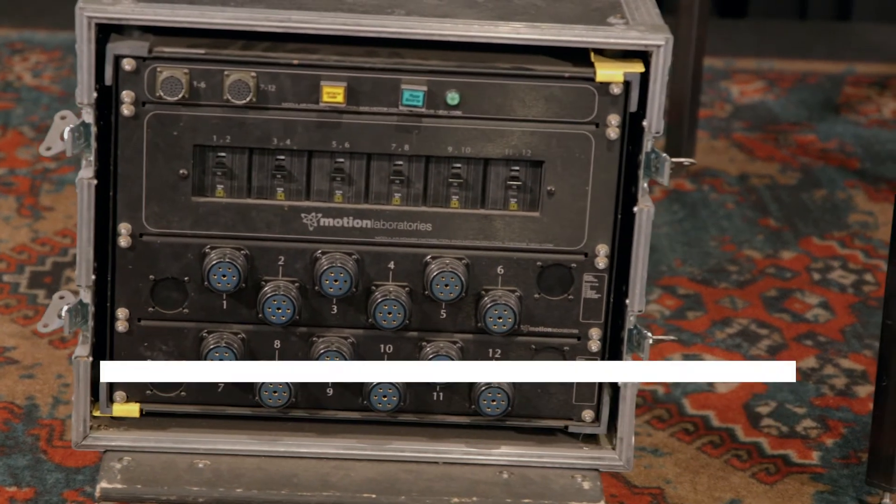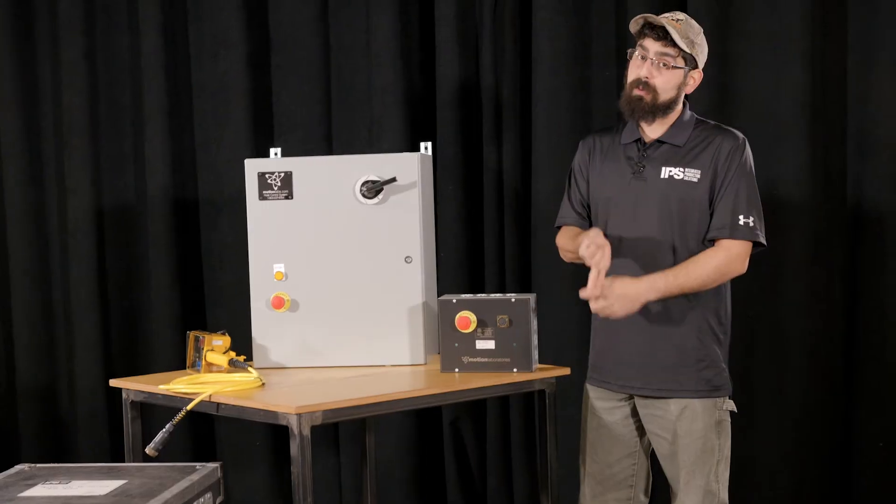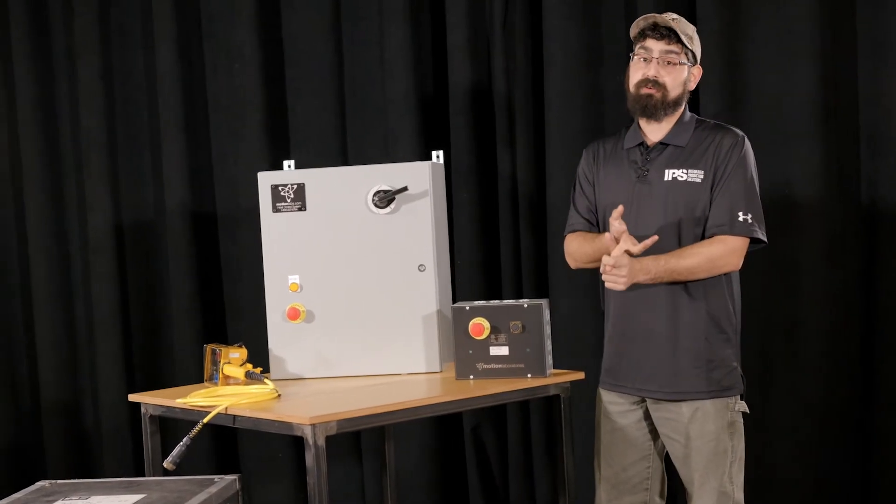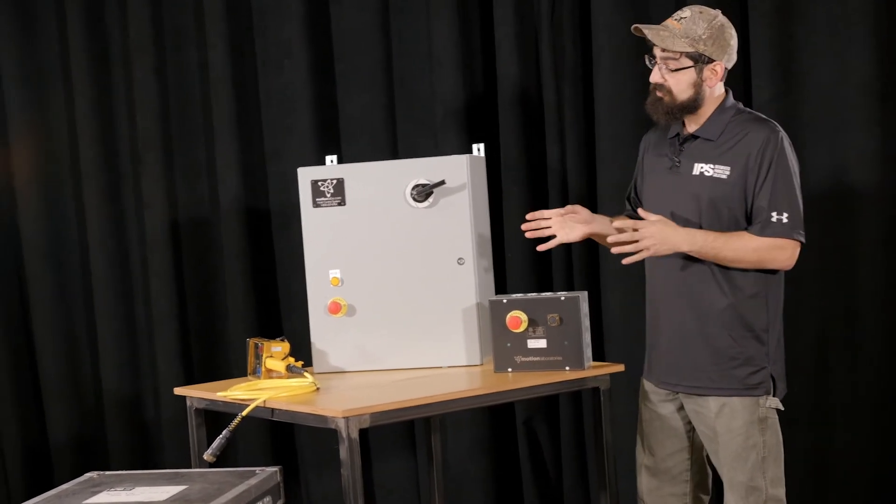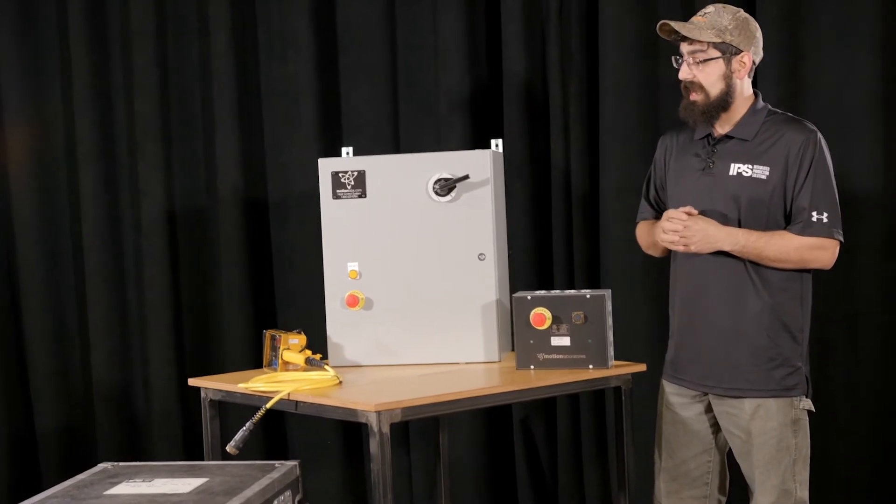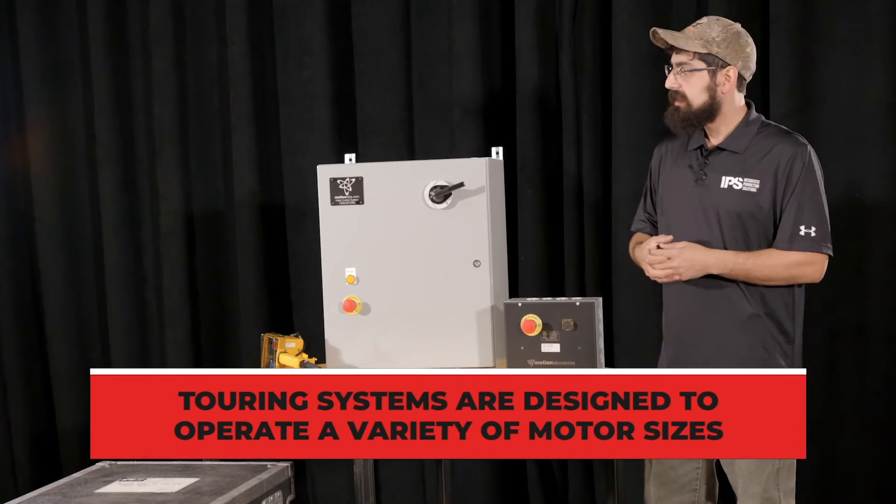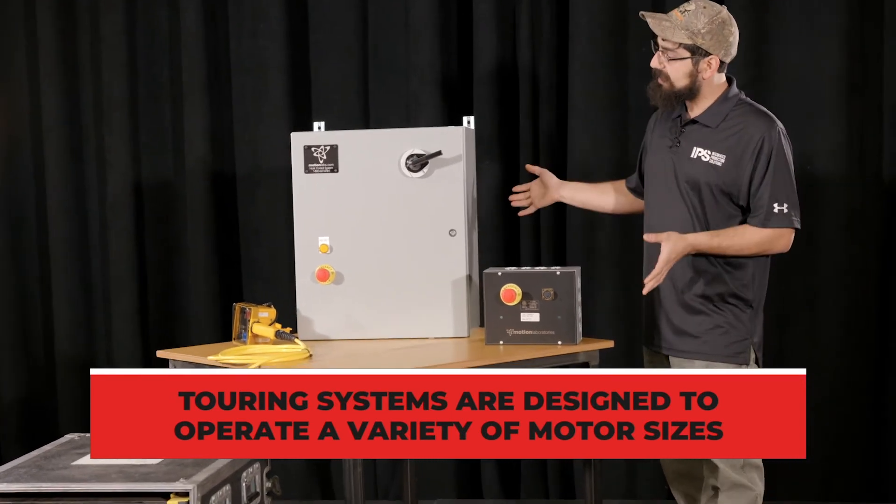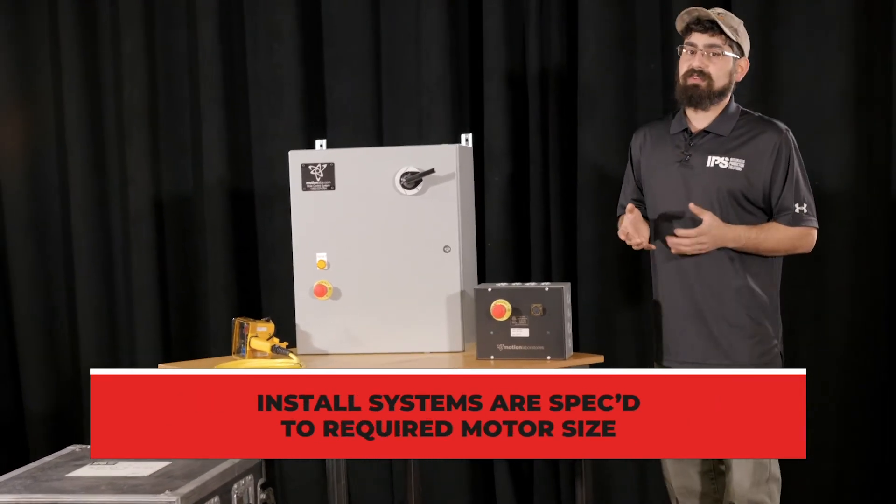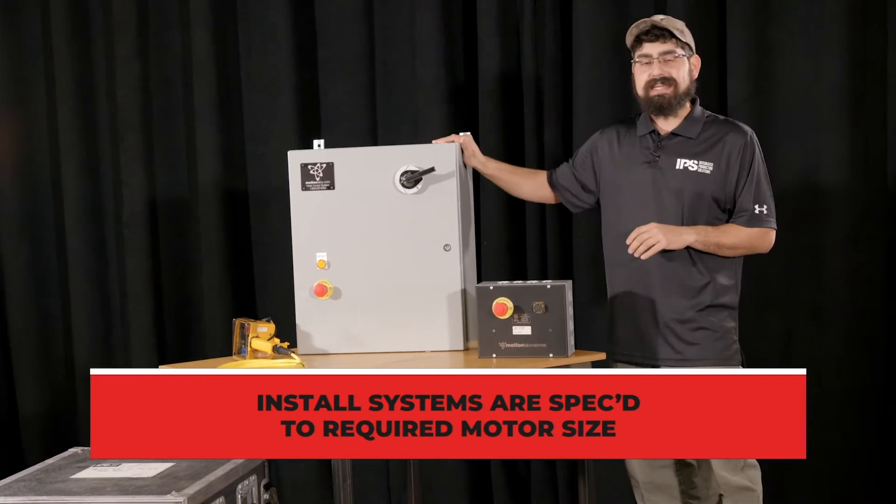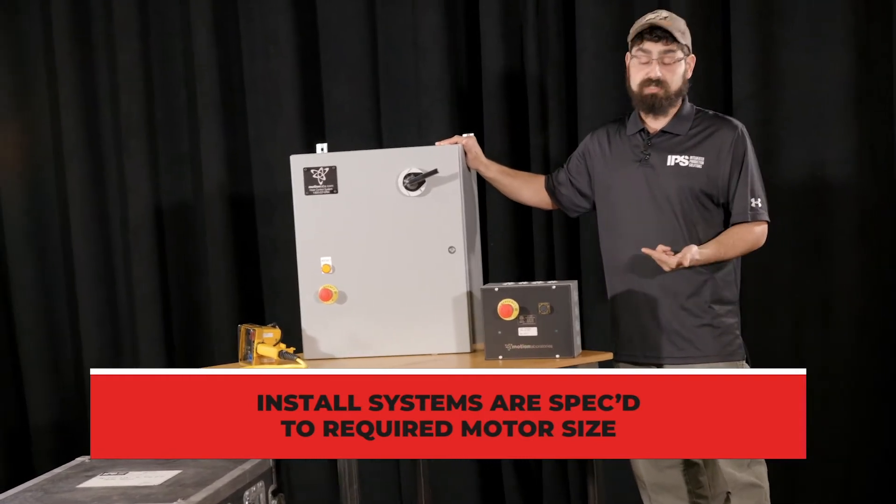Touring controllers will also carry their own power distribution, their own output, and their own safety breakers on them. They're also designed to take anywhere from your quarter ton motors all the way up to your two ton motors. Same scenario for your installation controllers. The biggest difference there is what fuse sizes they're going to put inside of your case, depending on your application.